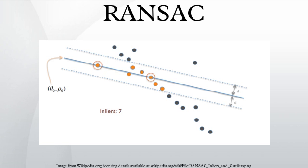The set of inliers obtained for the fitting model is called consensus set. The RANSAC algorithm will iteratively repeat the above two steps until the obtained consensus set in certain iteration has enough inliers.